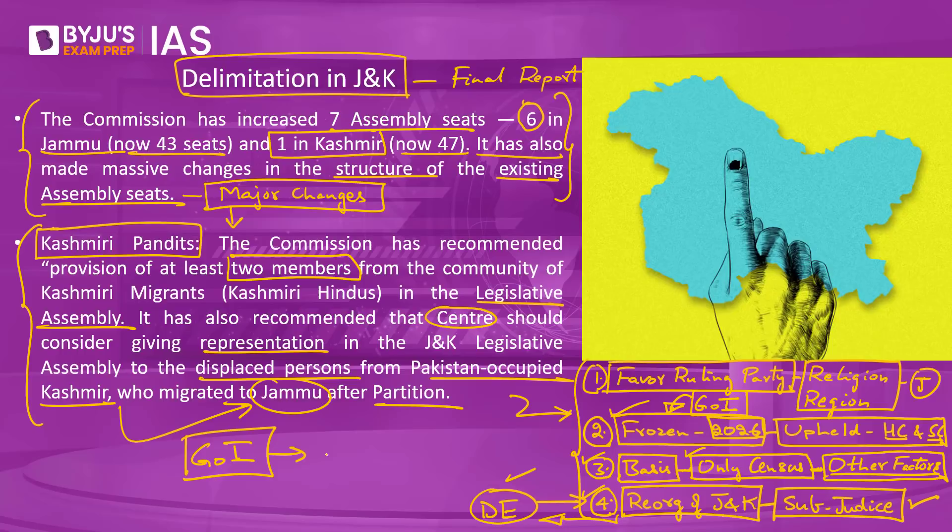The government of India has justified the exercise by stating that delimitation is absolutely essential to hold elections in the union territory of J&K and to restore the political and democratic process there. This concludes today's discussion.